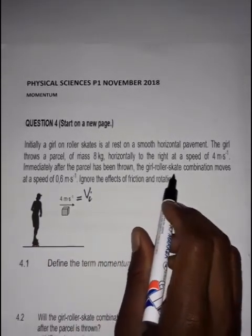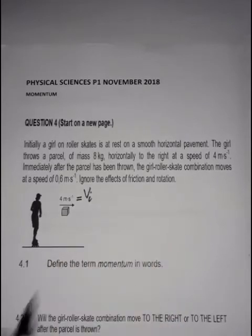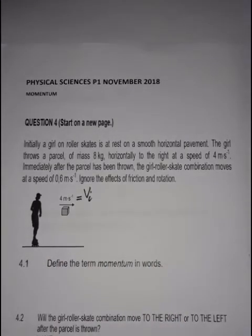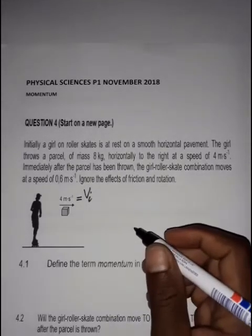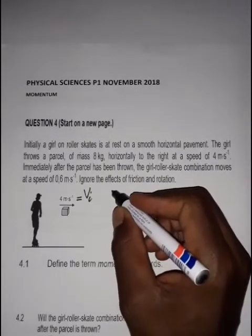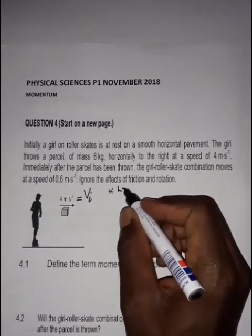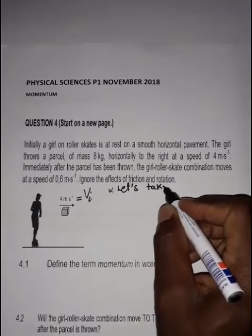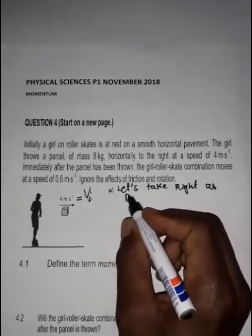Immediately after the parcel has been thrown, the girl-roller skate combination moves at a speed of 0.6 m/s. We are told to ignore the effects of friction and rotation, so we treat this as an isolated system. First thing to do is choose a direction — I'll take right as positive.